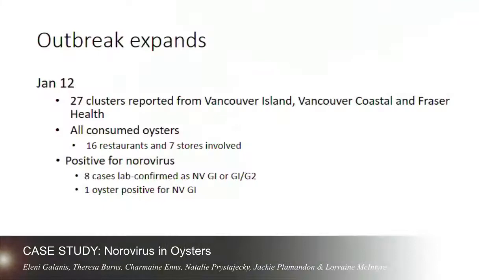Three weeks later we had 27 clusters of illnesses reported from Vancouver Island, Vancouver Coastal Health, and Fraser Health authorities — three regions. Much more widespread illness: all of these people had consumed oysters, with sixteen restaurants and seven stores involved.